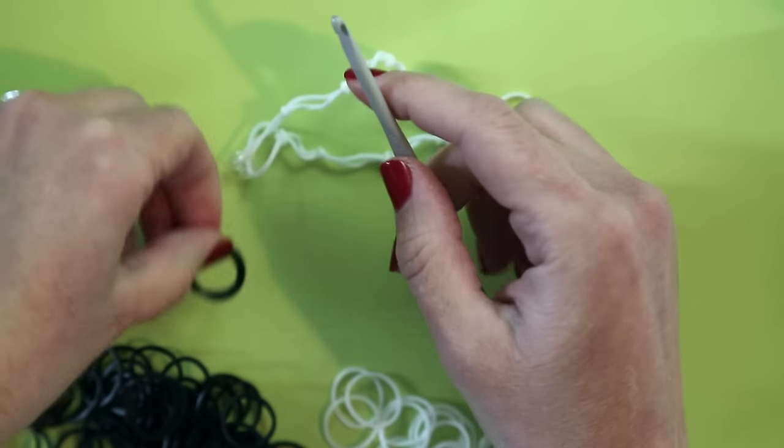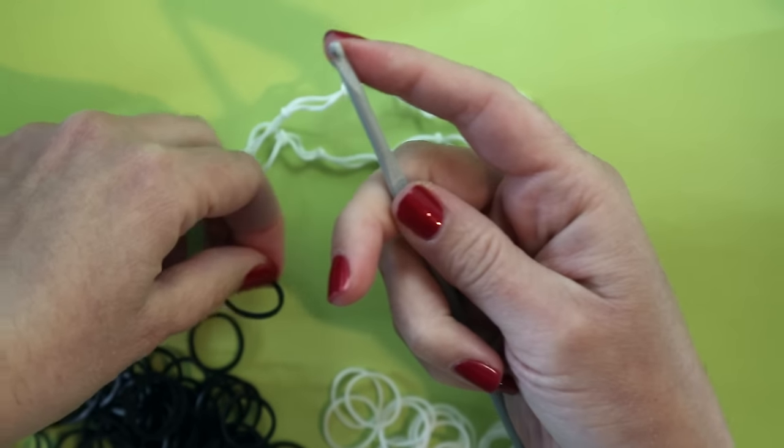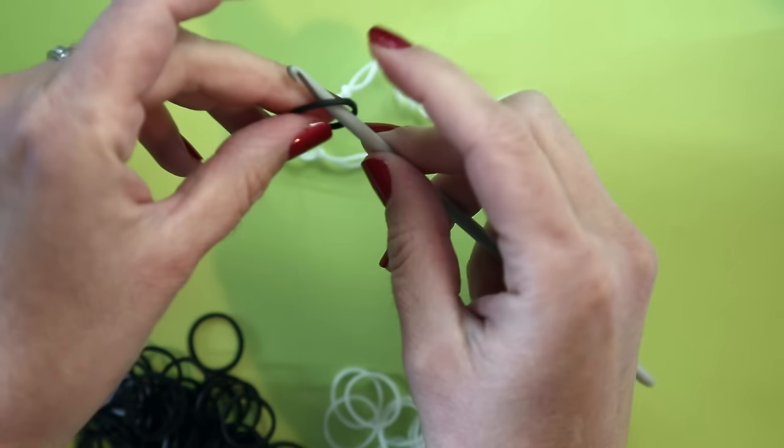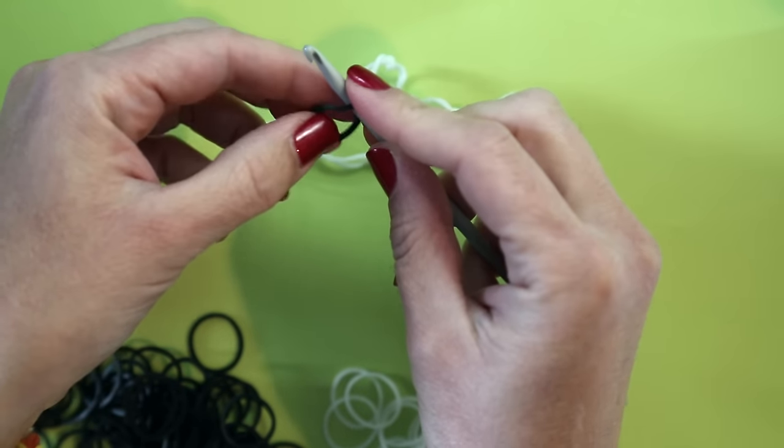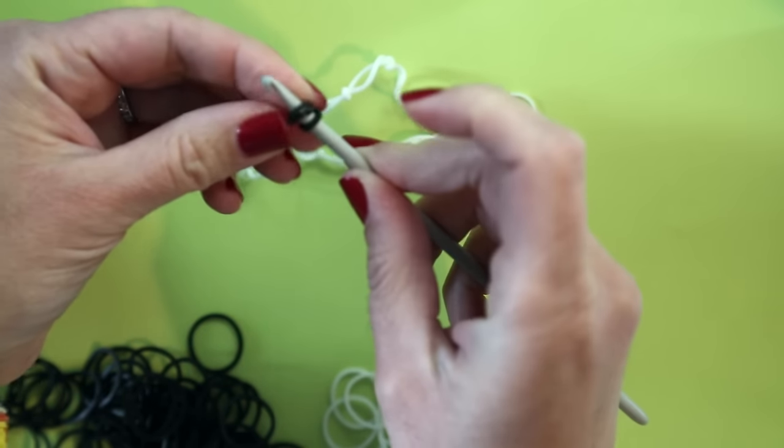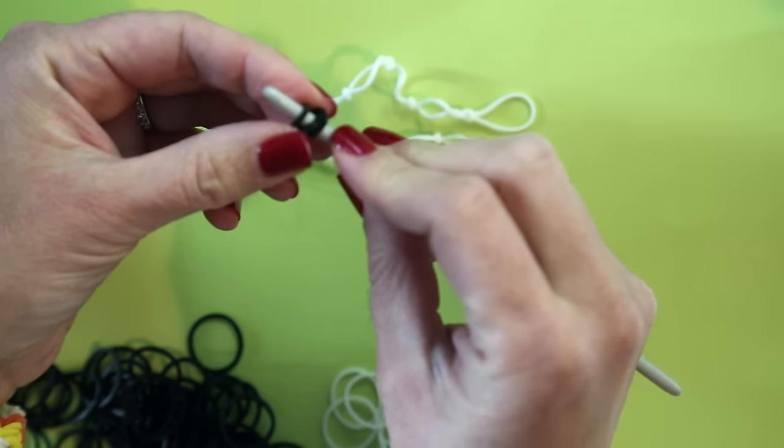So to make your spider you take your hook, you can use a hook that came with your loom kit or a crochet hook. You're going to wrap your spider color band around the hook twice so that you see three loops on your hook.